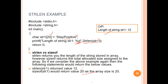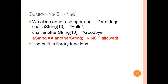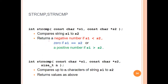Coming to comparing strings — direct comparison using == is not allowed in C, so we have to go for a built-in library function. The function is strcmp. The strcmp function performs comparison of two strings. We input s1 and s2, and the comparison results in one of several outcomes based on the characters in each string.